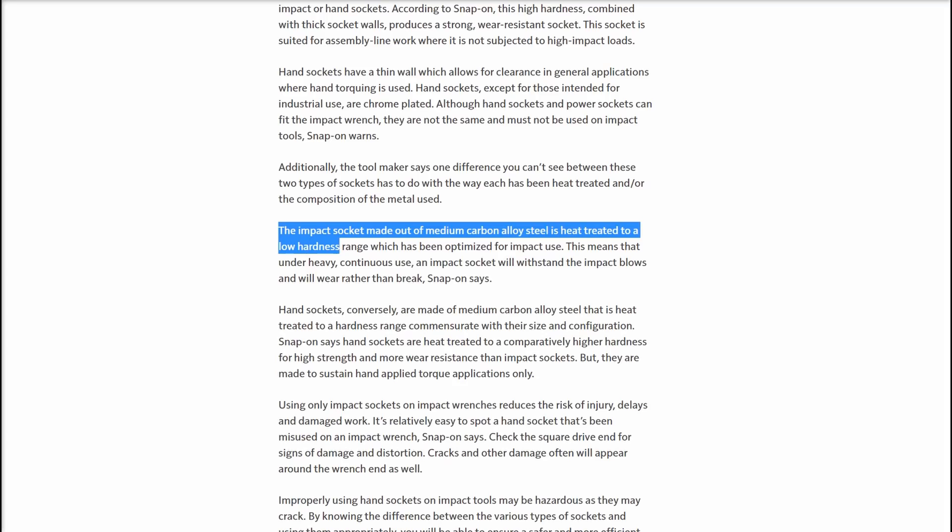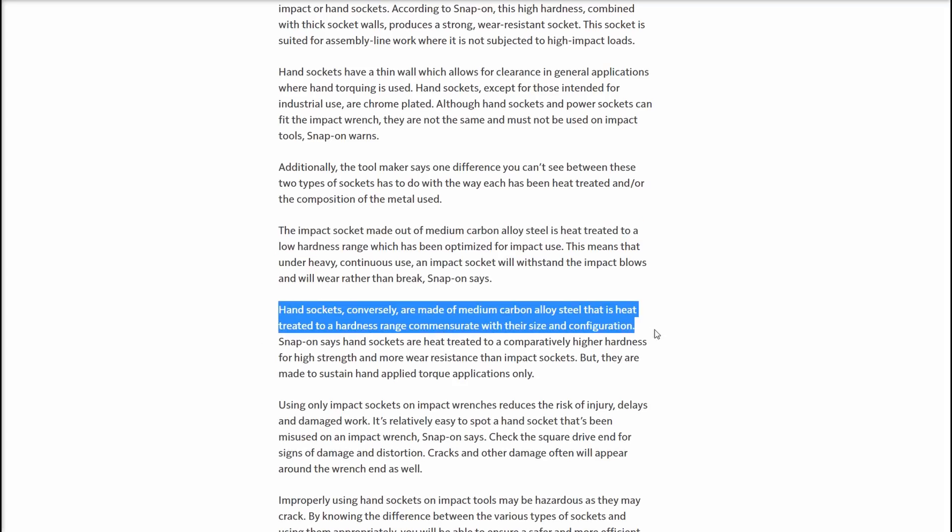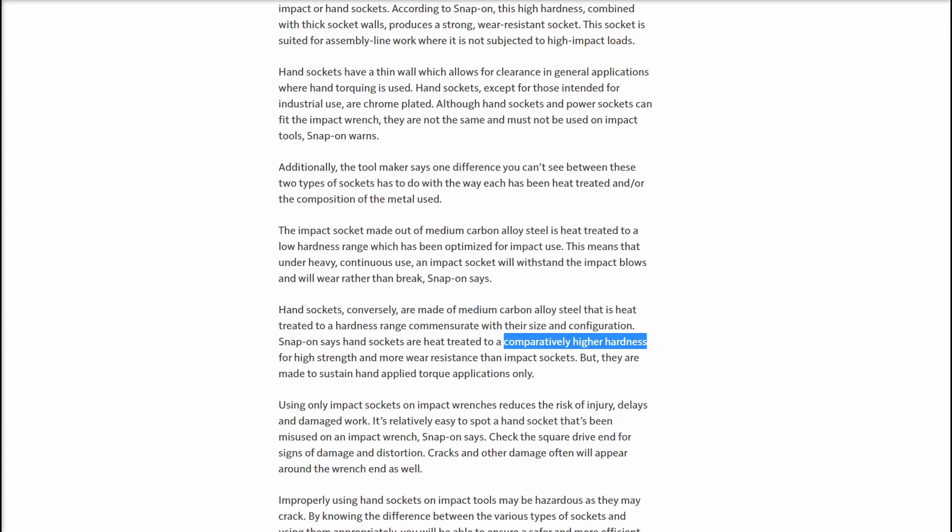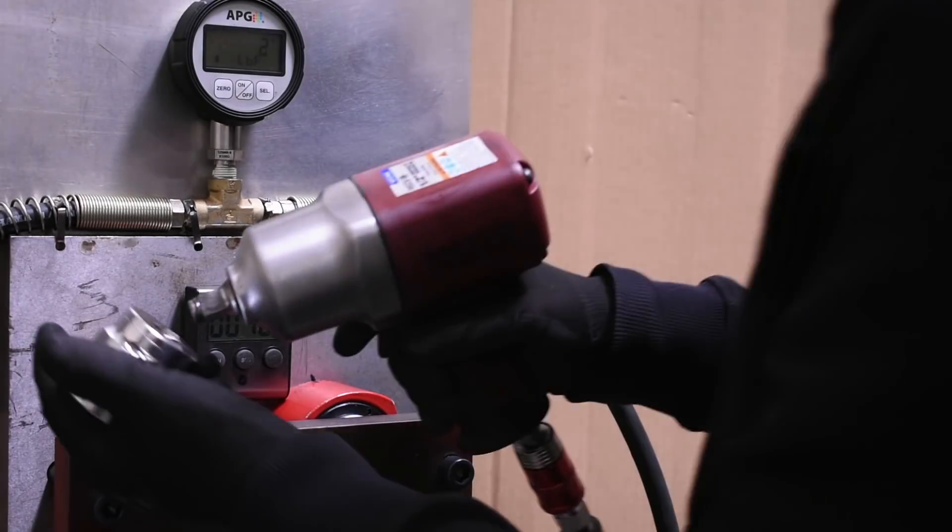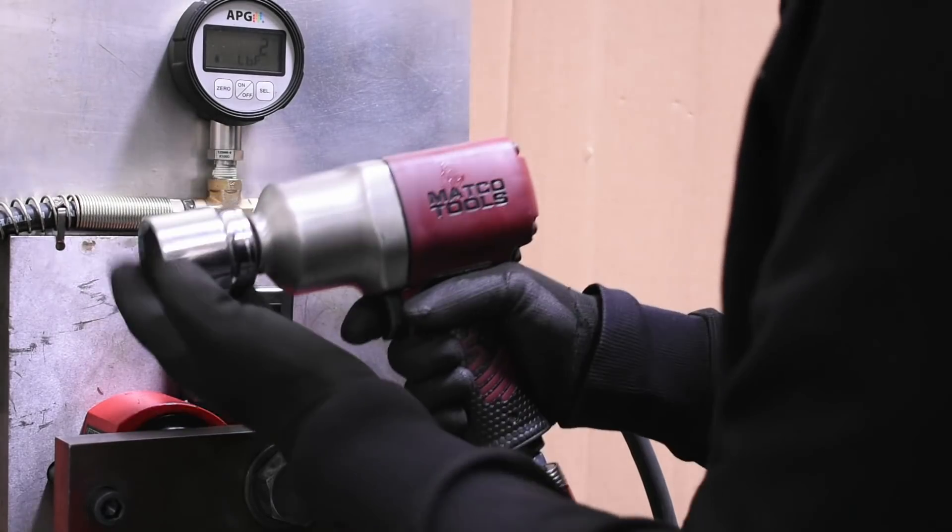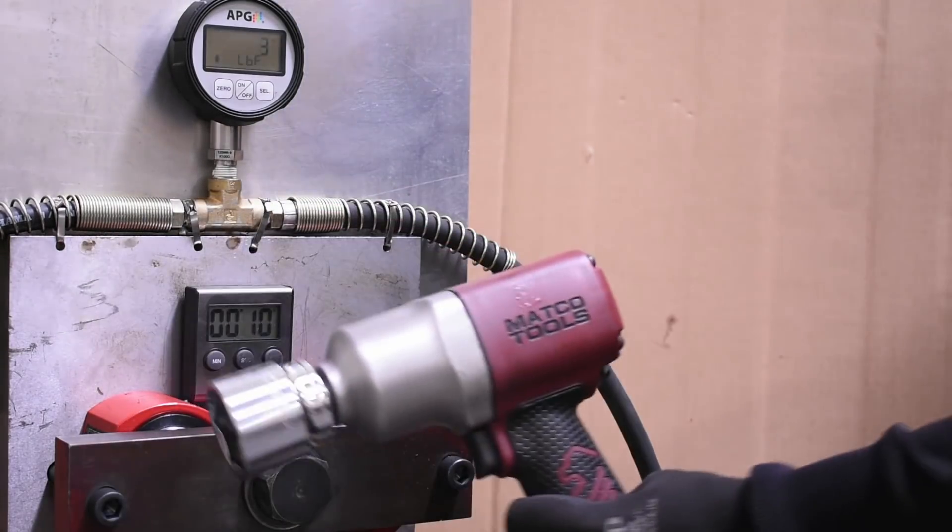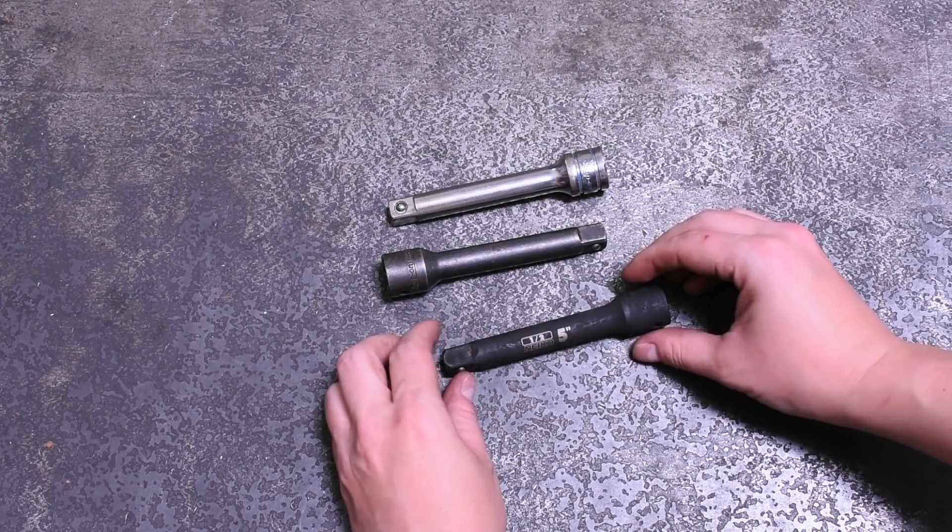The chrome hand use only tools Snap-on says are made from a medium carbon alloy as well, so possibly the same, but heat treated to a comparably higher hardness. This reduces wear over time when used by hand, but maybe is not suited for a life of hard impact blows. So let's see if what they're saying holds true for their US brand as well as these cheaper imports from China.